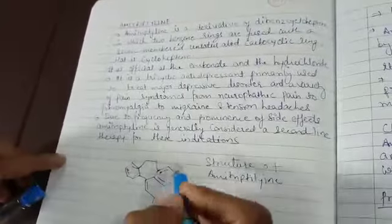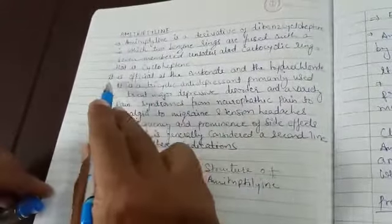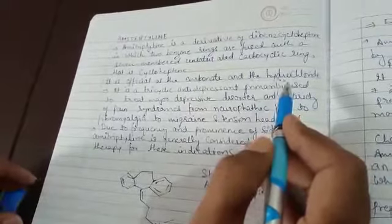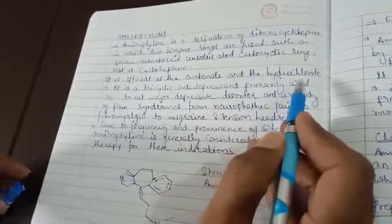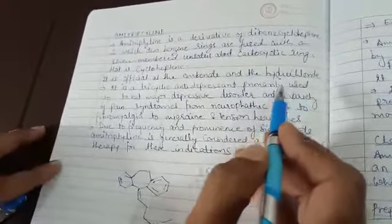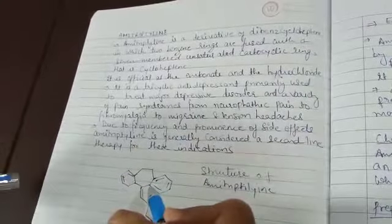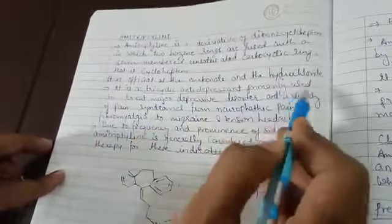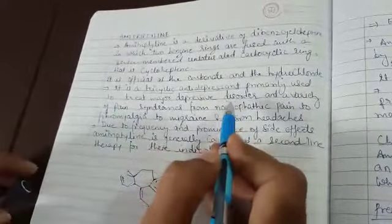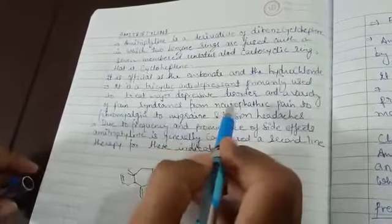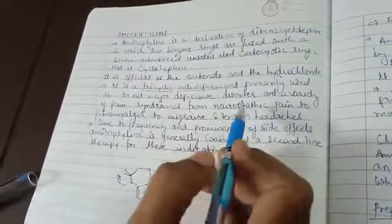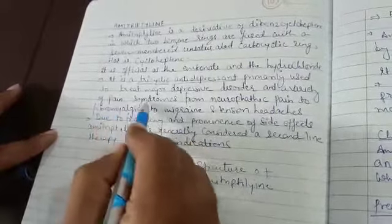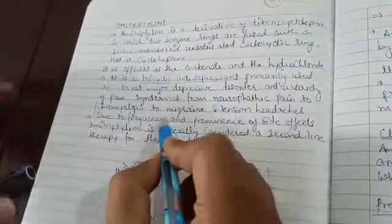Now we see this structure and it is official as the embonate and hydrochloride. It is a tricyclic antidepressant primarily used to treat major depressive disorder (MDD), which is a very major depressive disorder we treat, and a variety of pain syndromes.